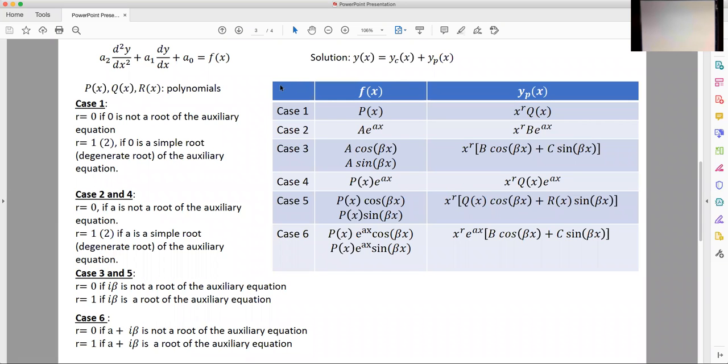So in this video we'll look at a method for finding the solution to a second order differential equation with constant coefficients where the term on the right hand side is not equal to zero. This is called the particular solution which we'll denote by y sub p of x.